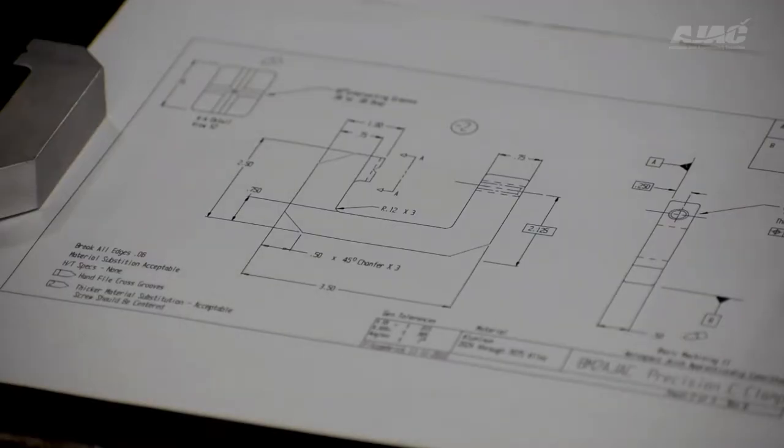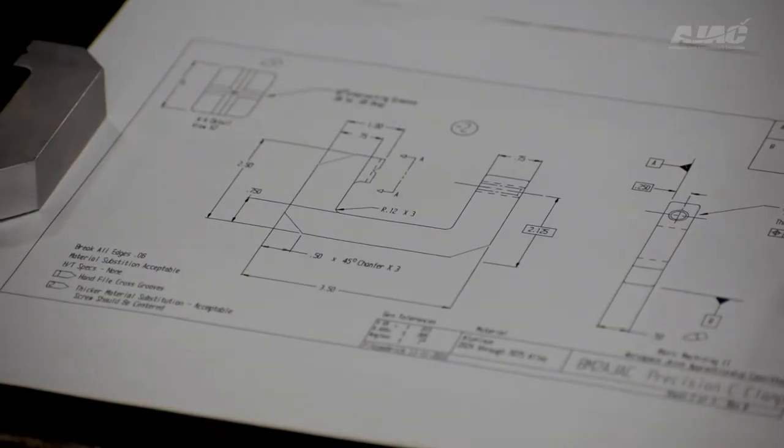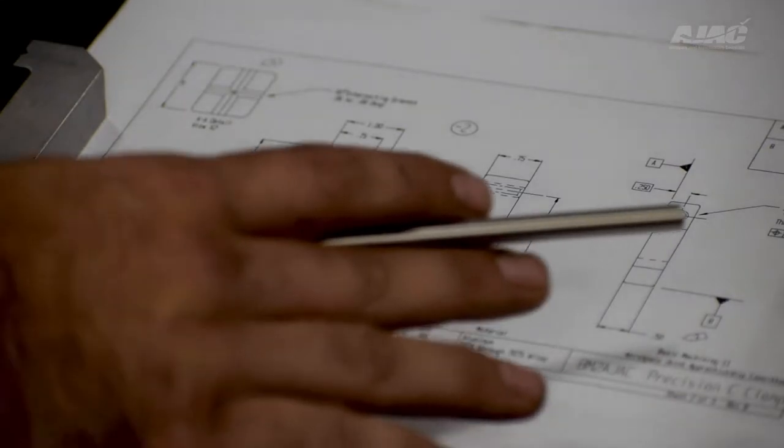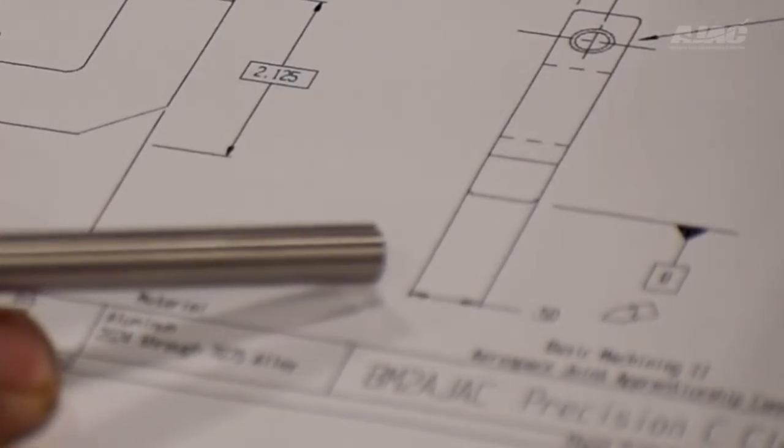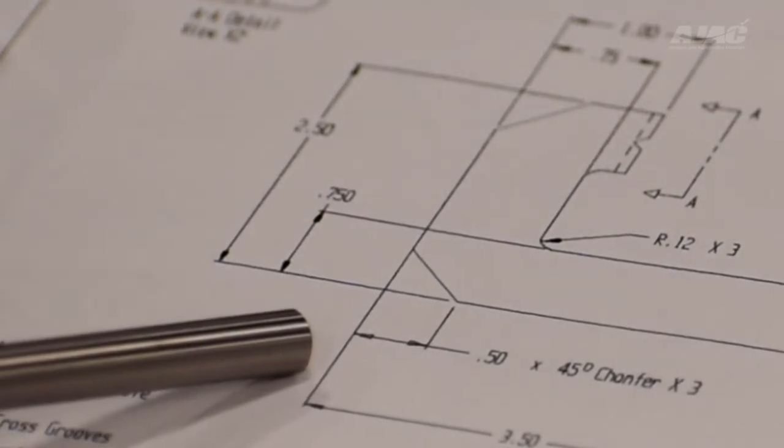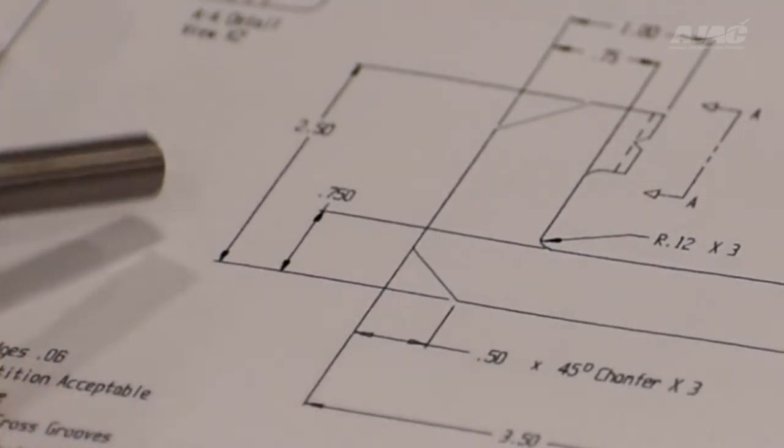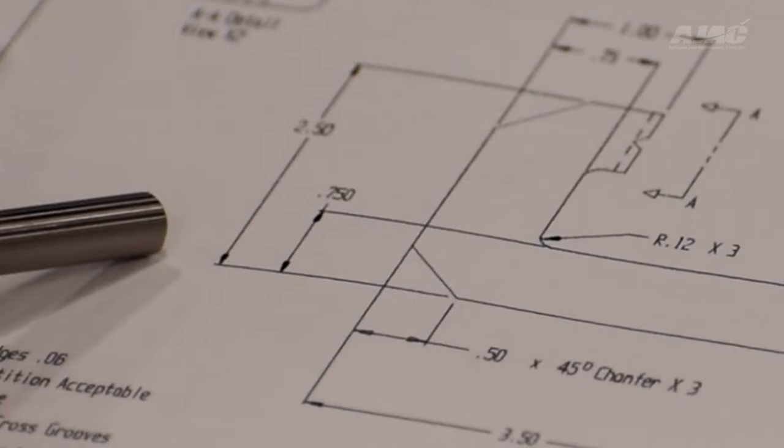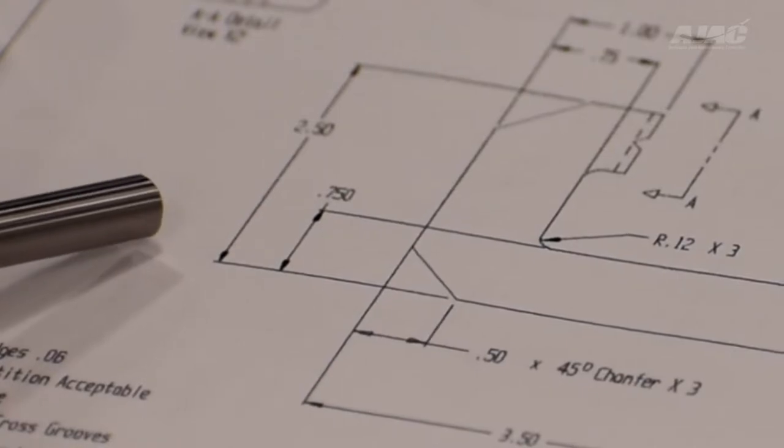So if you will look at this print, what we're going to be doing is machining the block down to a half inch thick, and the overall width of the clamp is going to be three and a half inches, while the height of the clamp that is sitting on the side is going to be two and a half inches.